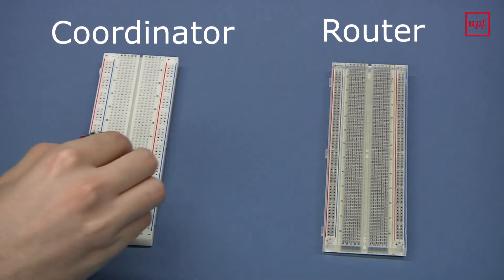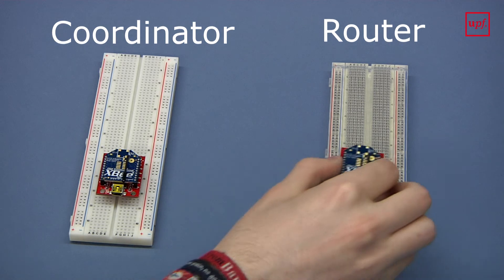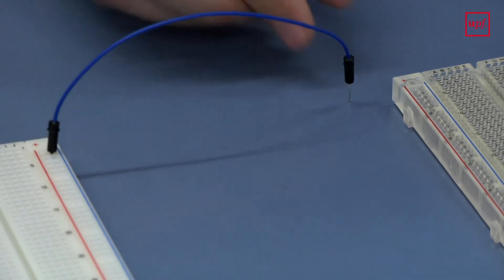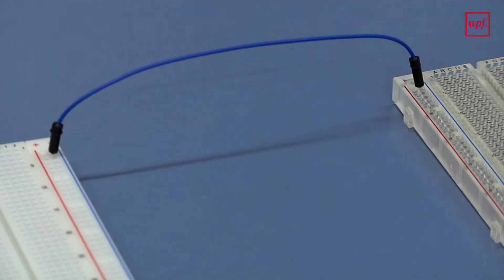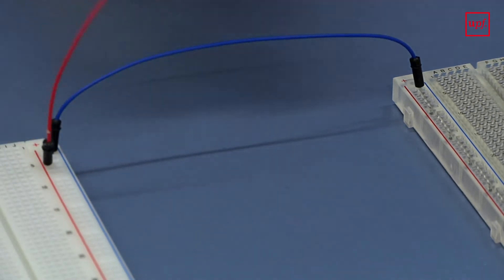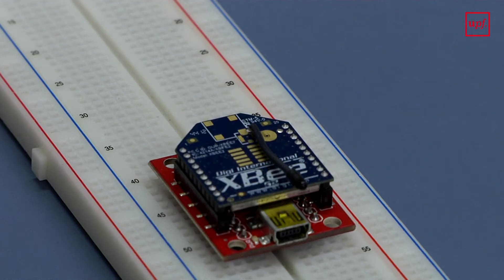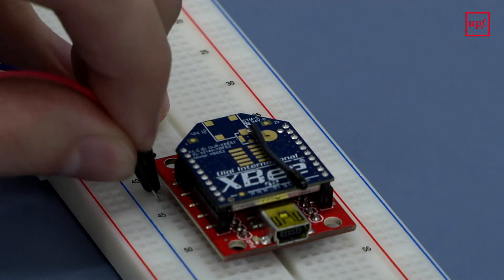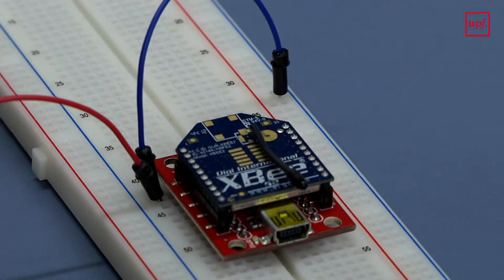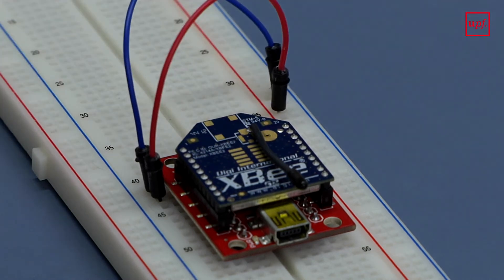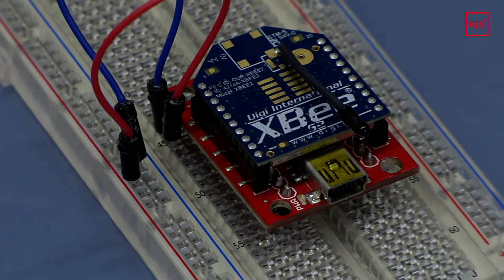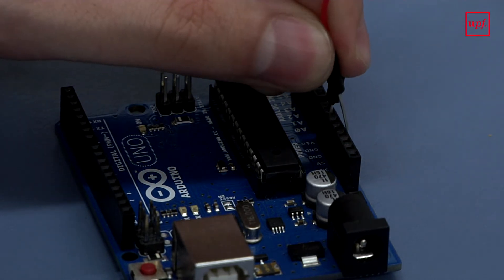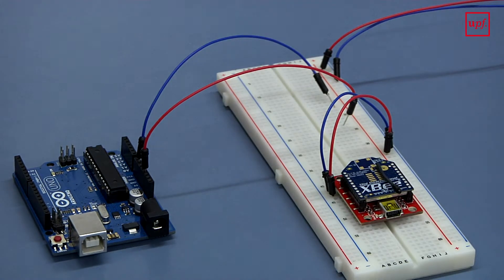We're going to use one breadboard this time, but if you feel more comfortable with two, just make sure to power the other XBee. Place the XBee Explorers with as much separation as you can on the breadboard — this way we free enough holes to make the connections. Connect the 3.3 volt and GND pins of each XBee to the corresponding holes in the breadboard, then power the rails to which you connected the 3.3 volt legs of the Explorer. Repeat this step with the GND.